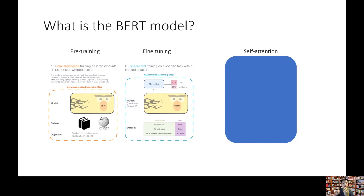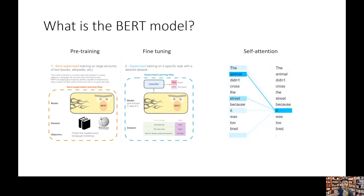The other concept is self-attention — the idea that we can use weights to associate one word to different words in the sentence. This helps give the idea of context in a sentence and is really important for BERT and some of its use cases.